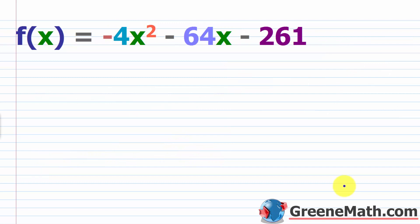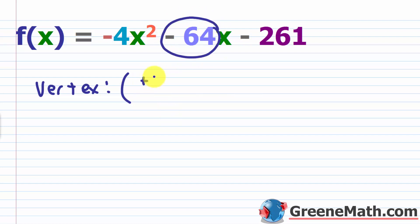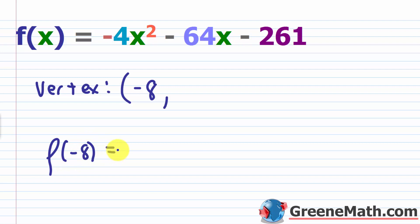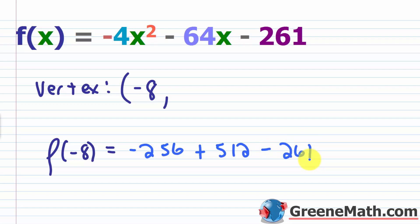Let's do one more, since it's good to get a lot of practice before you start graphing. We have f(x) = −4x² − 64x − 261. The vertex x coordinate is −b / 2a. Here b = −64 and a = −4, so x = −(−64) / (2 × (−4)) = 64 / (−8) = −8.